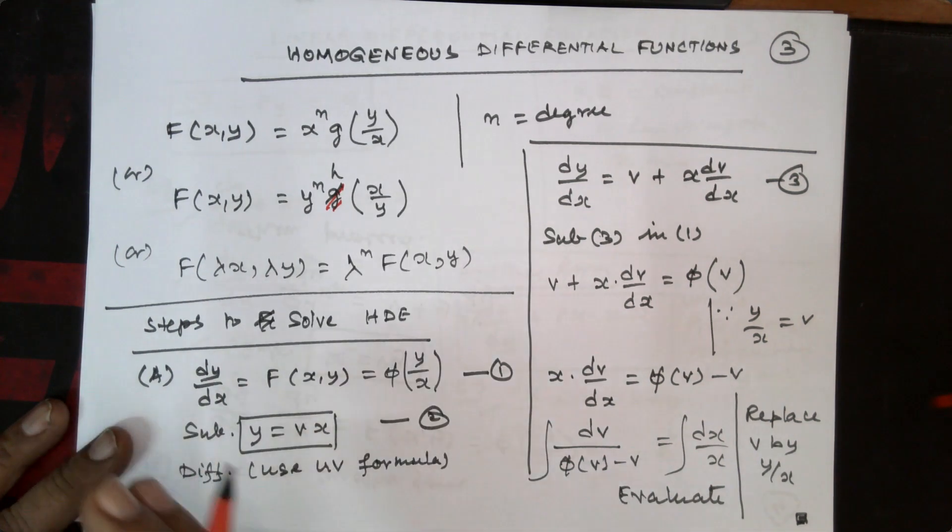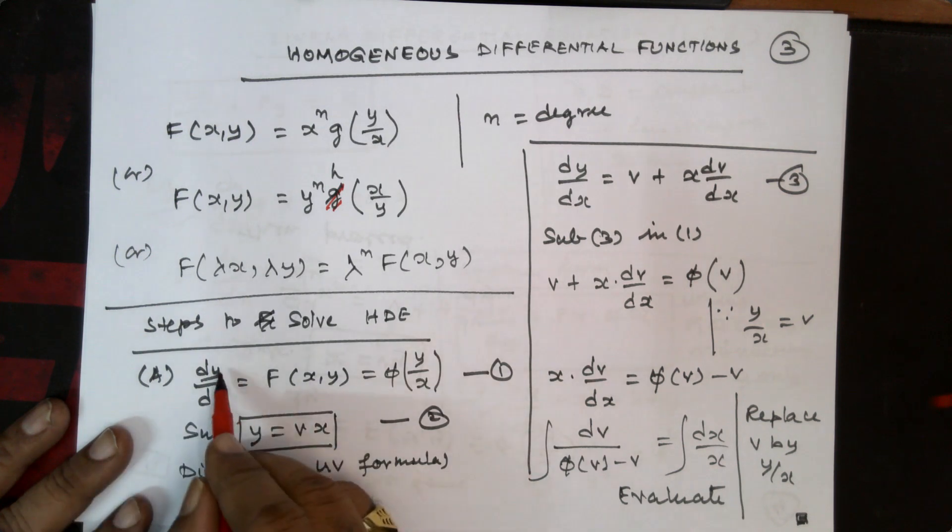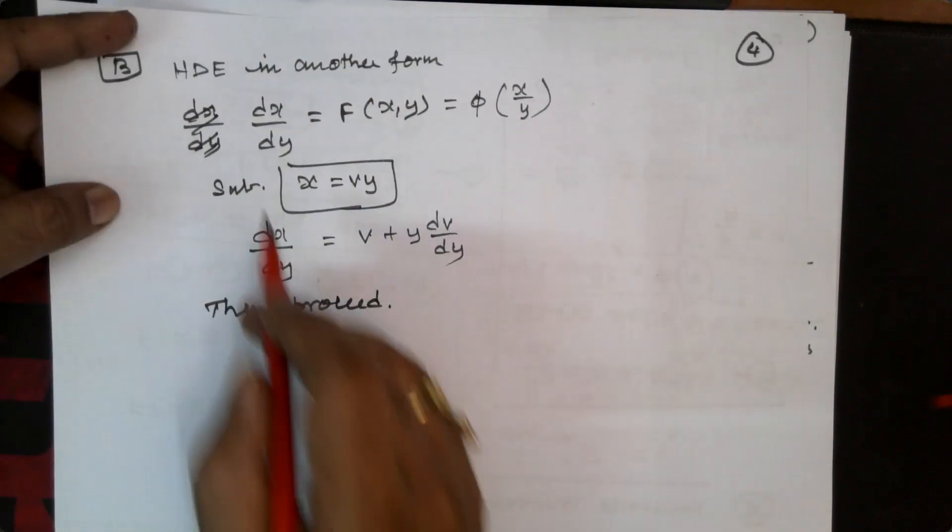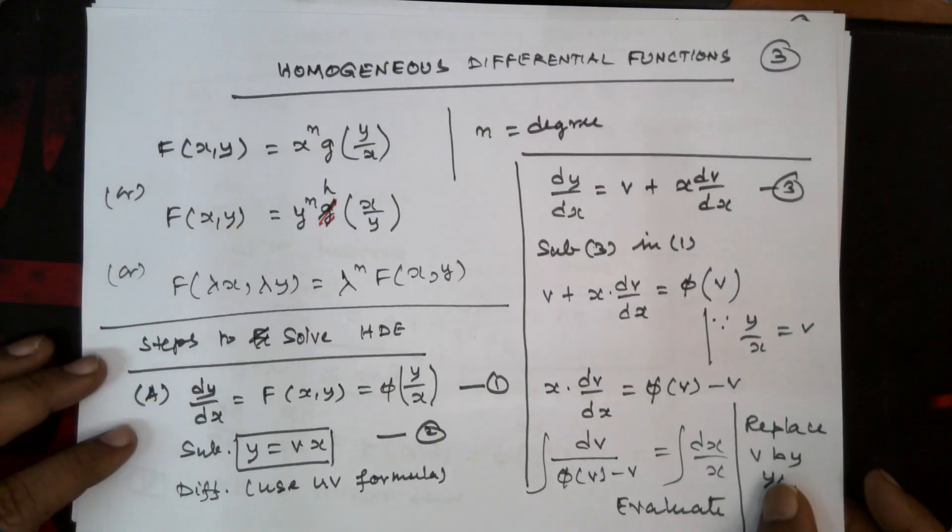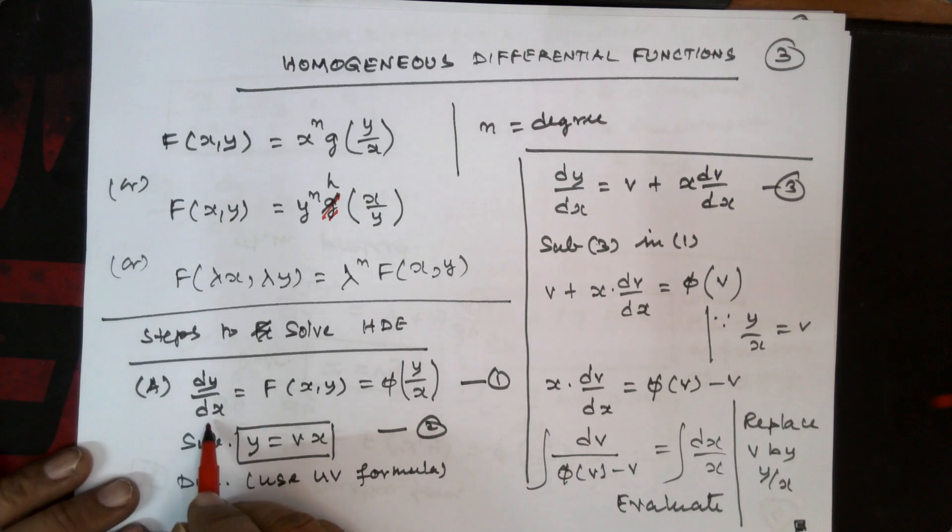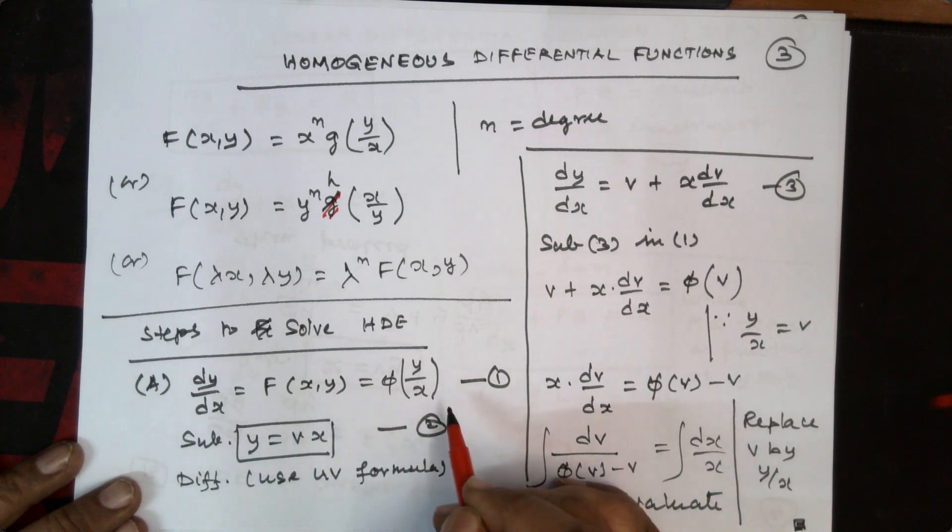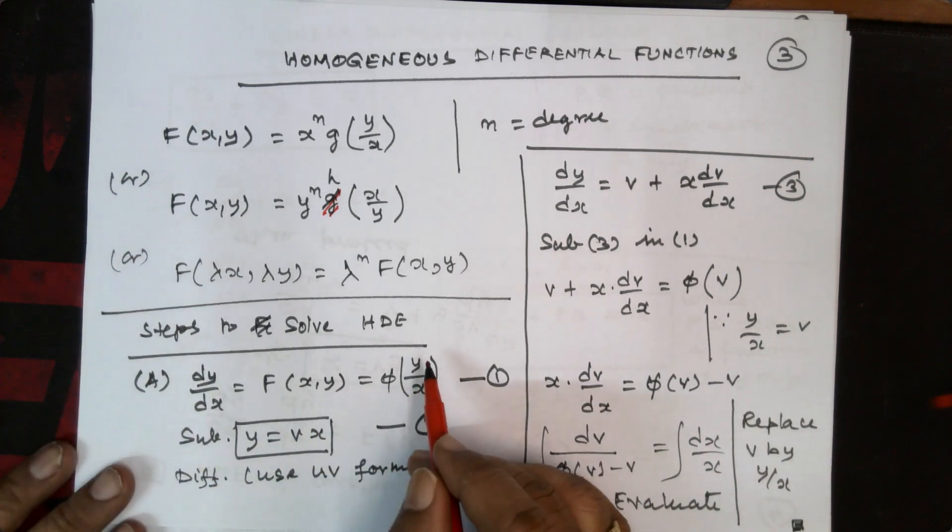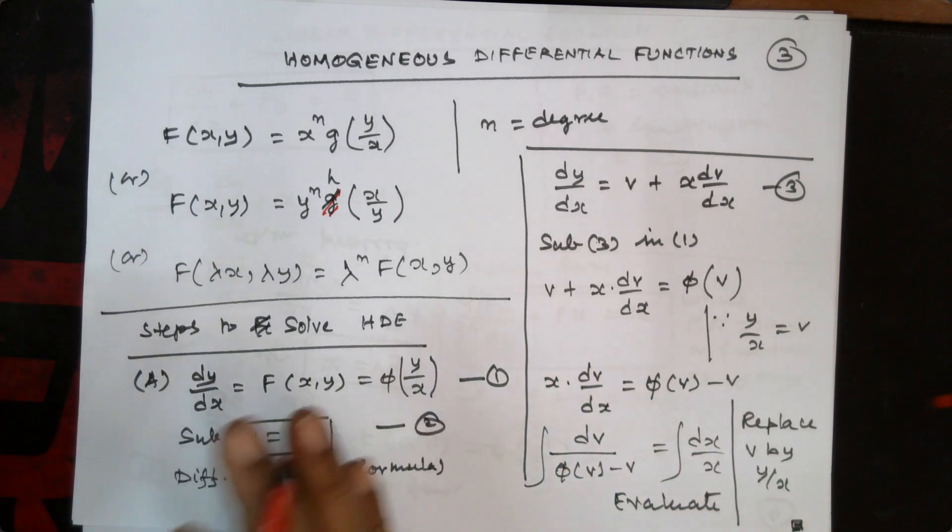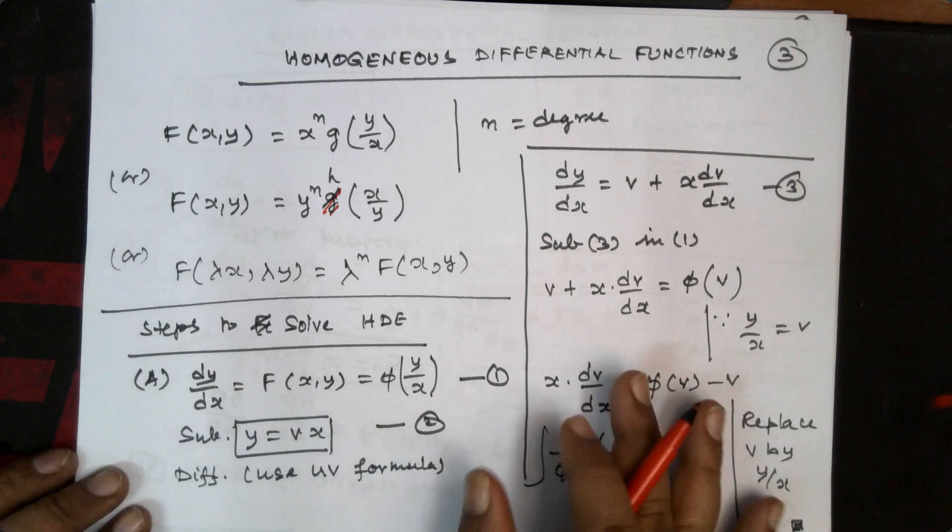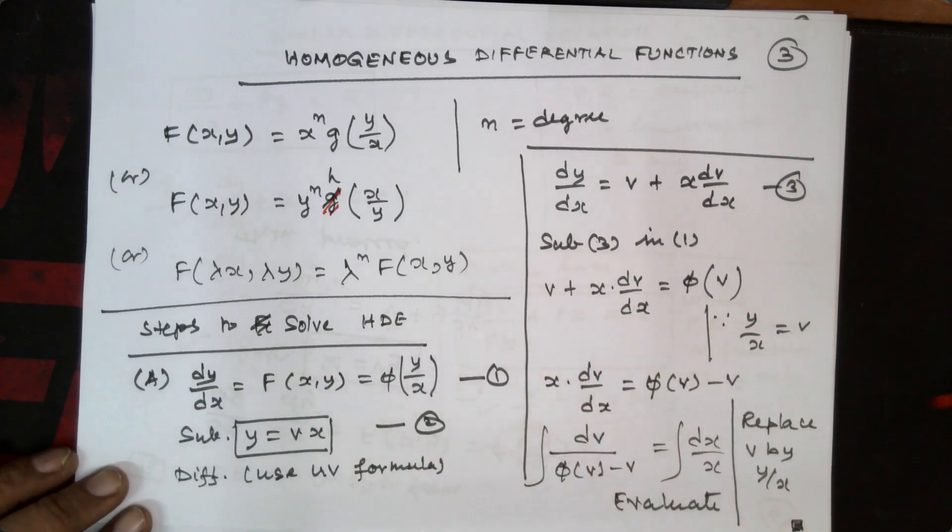Now we have essentially two forms here. One is dy by dx form, another is dx by dy form. Now let me consider the dy by dx form. So dy by dx is equal to f of x, y, that is phi of y by x. Now in this case, because it is totally associated, it will not be separated so easily. Again we can consider the substitution that is y is equal to vx.